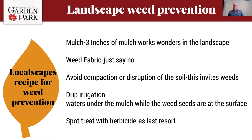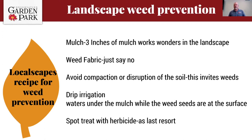The local recipe for weed prevention: use three inches of mulch, which works wonders in any landscape. Don't use weed fabric — it can even kill trees when plants outgrow the holes cut in it and nobody enlarges them. Avoid compaction and soil disruption, which are a definite invitation for weeds. A drip system on the ground with mulch on top is really my best advice, and then spot treatment with herbicides as a last resort if needed.